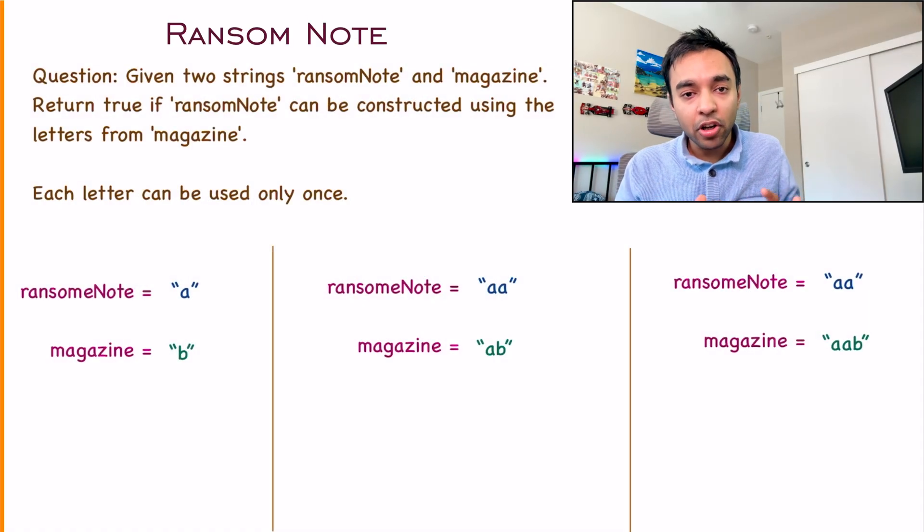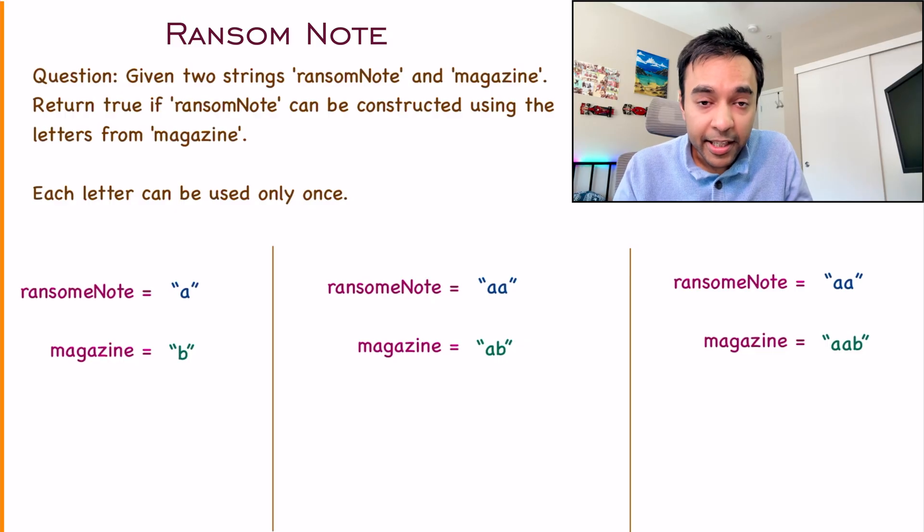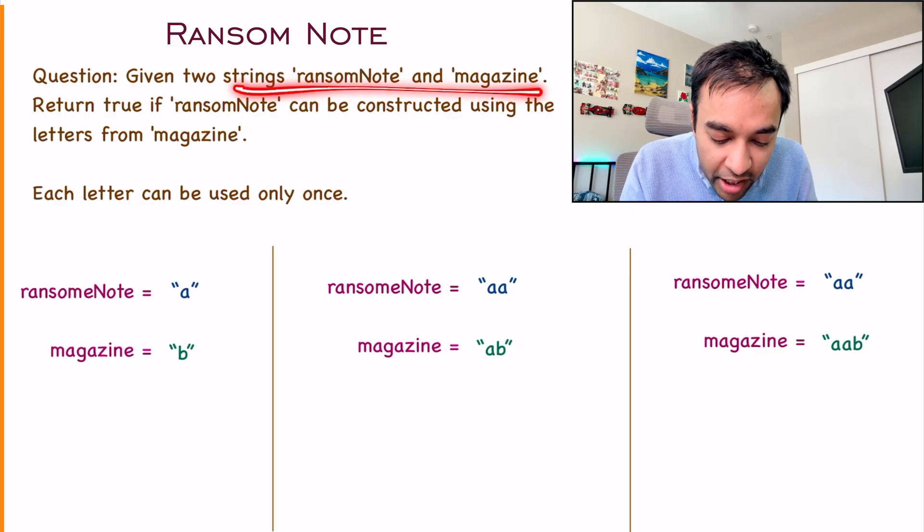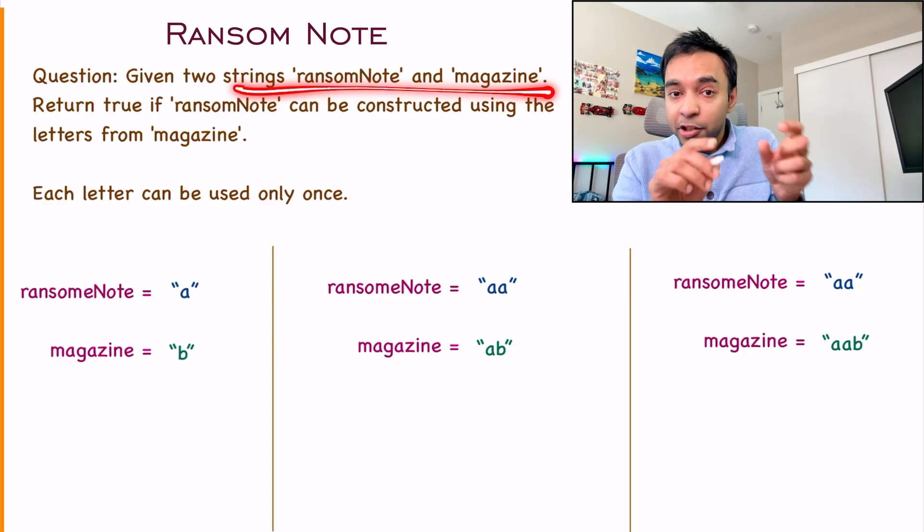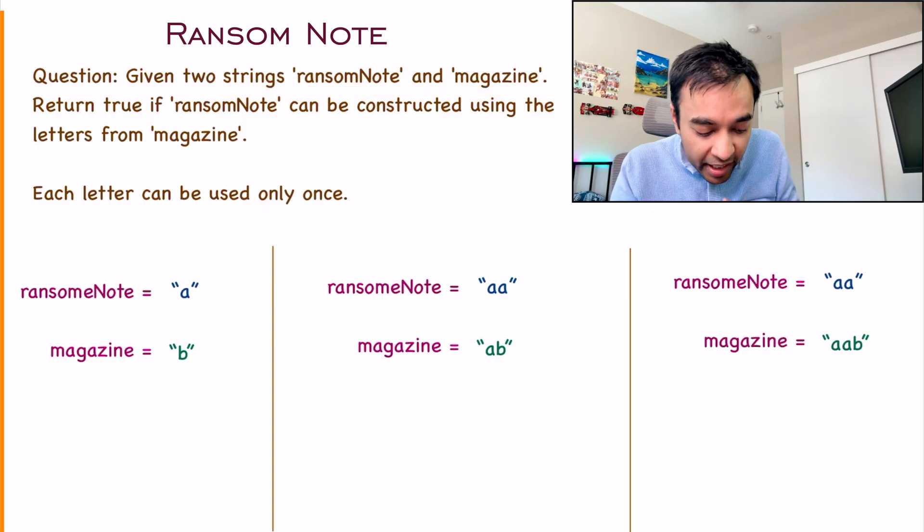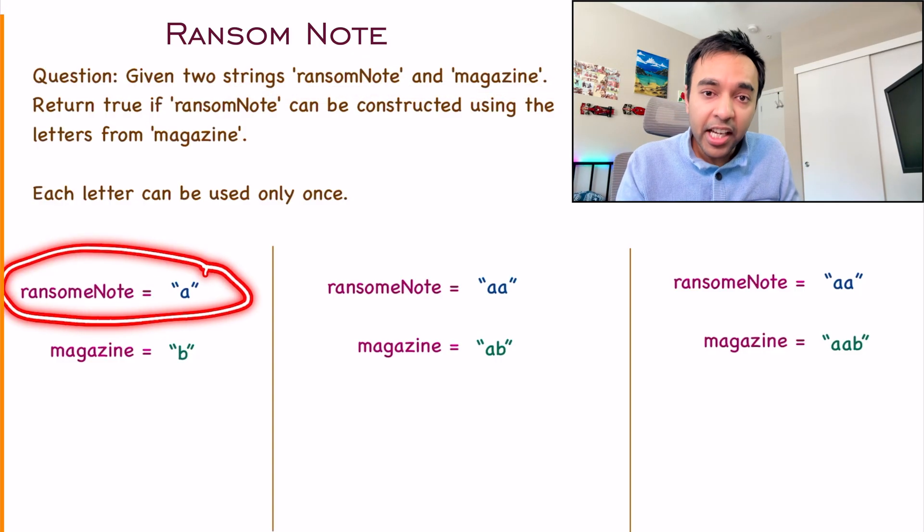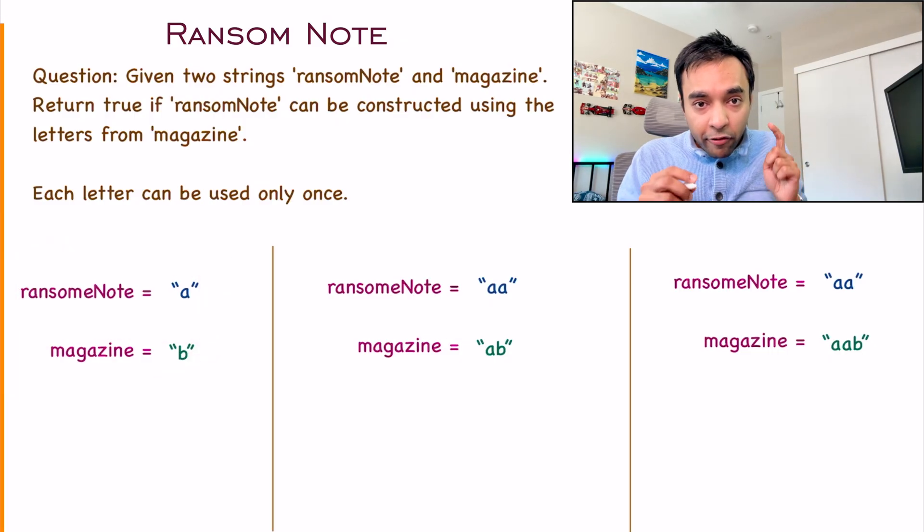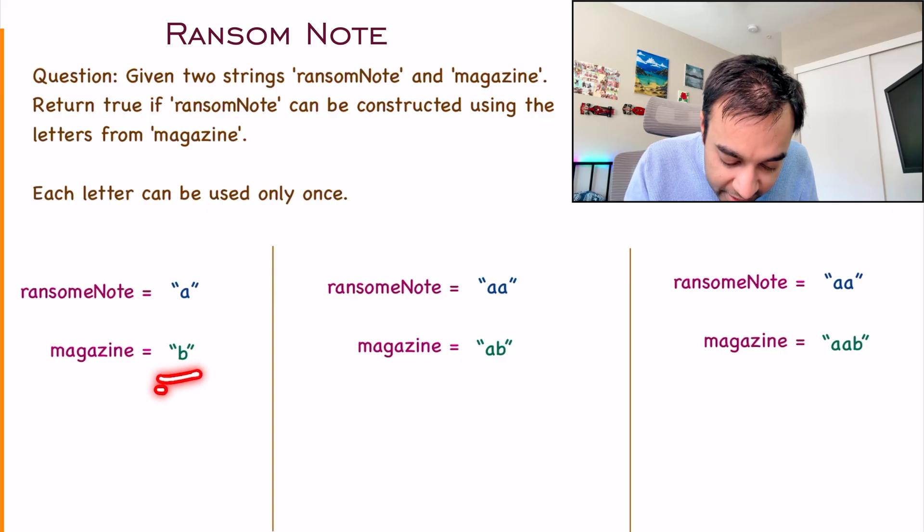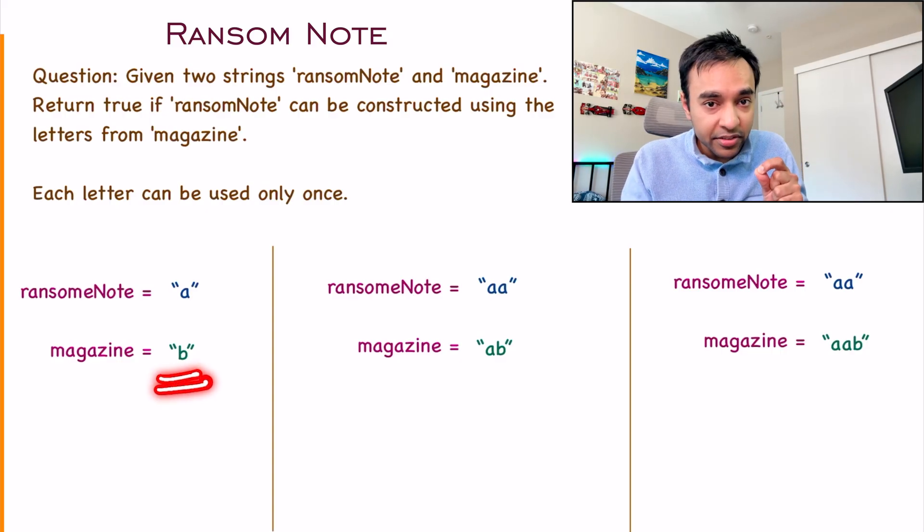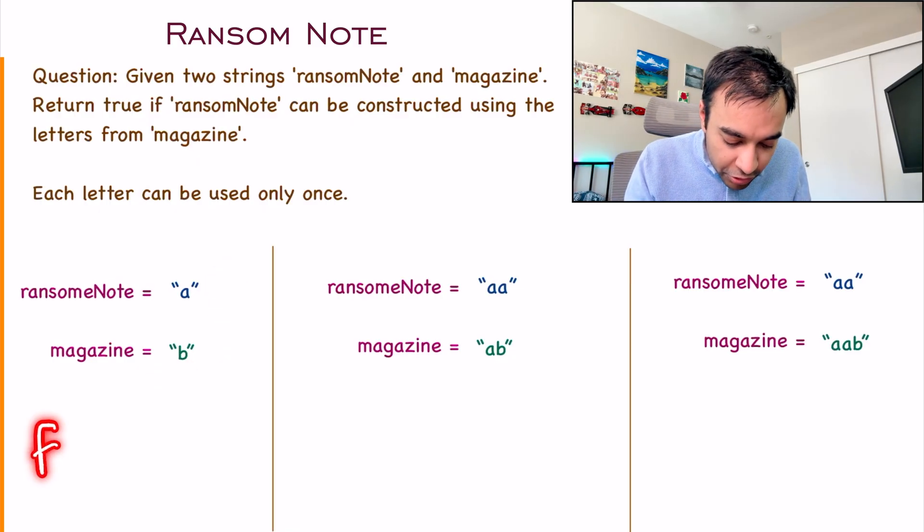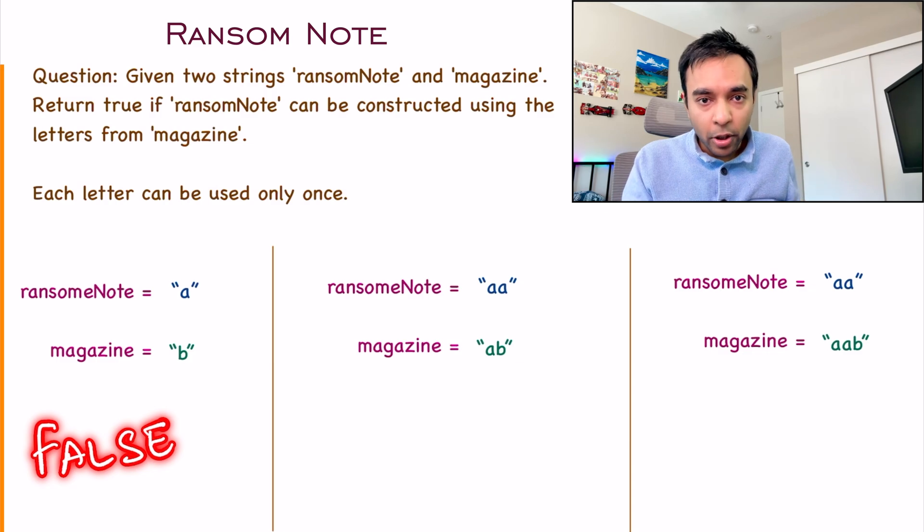First of all, let's make sure you understand the problem statement correctly. Basically, you are given two strings and you have to determine if you can construct the first string using the letters available in the second string. For example, in my first test case, I only have the letter B in magazine. Can you use it to construct A? No. So the answer will be false because it is not possible.